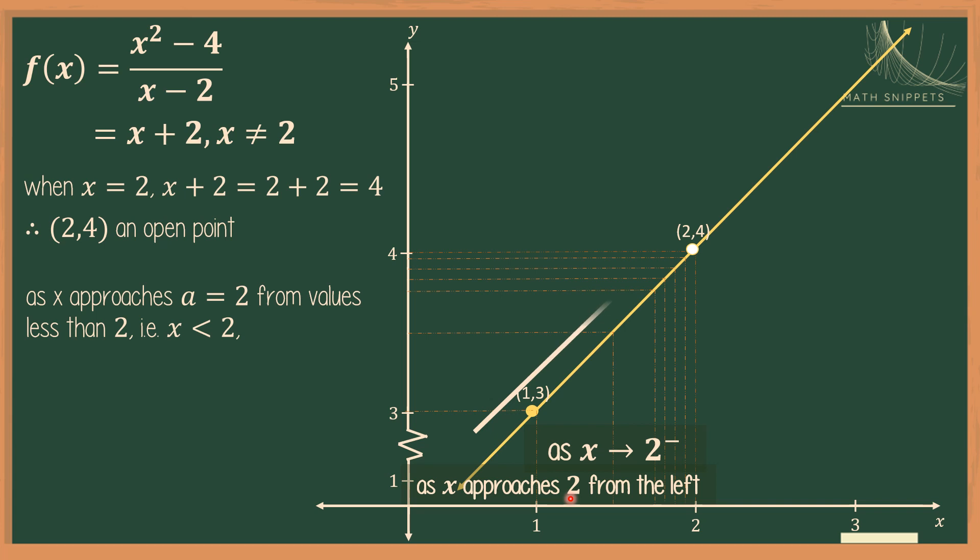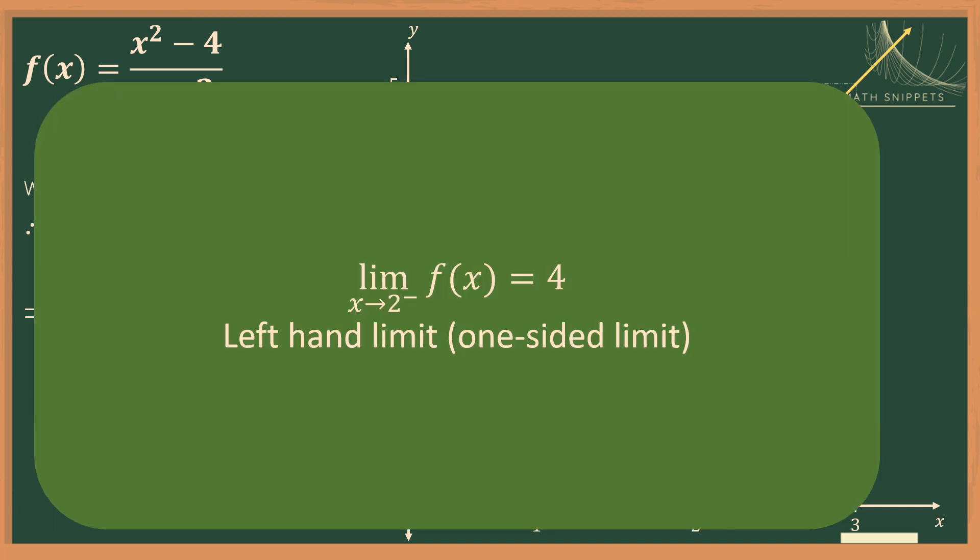We have seen that the points on the graph gets closer and closer to 0.24. This means that the function values, or f of x, approach 4. In limit notation, we get the limit of f of x as x approaches 2 from the left is equal to 4. This is a one-sided limit, which we call the left-hand limit, since we are taking values of x from the left of 2.